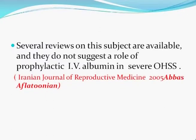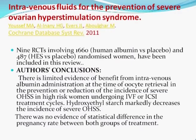Several reviews, including Abbas F. Lothounian in 2005, do not suggest a role for prophylactic IV albumin in severe OHSS. A 2011 Cochrane database review concluded that there is limited evidence of benefit from intravenous albumin administration at the time of oocyte retrieval in the prevention or reduction of severe OHSS in high-risk patients, while hydroxyethyl starch markedly decreases the incidence of severe OHSS. There was no statistically significant difference in pregnancy rates between both treatment groups.